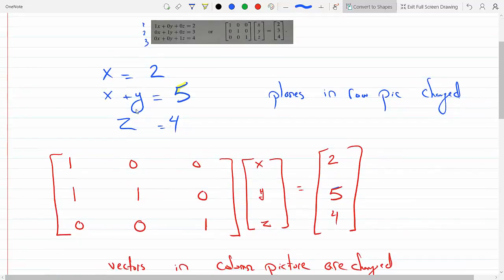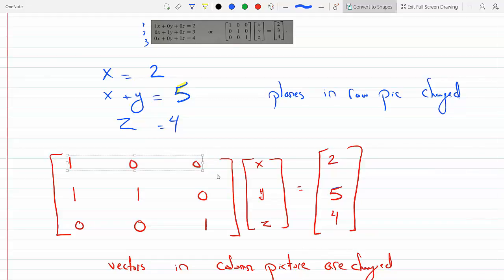So we can see that the planes in the row picture are changed. Now, if I put this in the matrix form, the coefficients of x, y, z take the first column, so the first equation takes the first column. These are the coefficients of x, y, z.